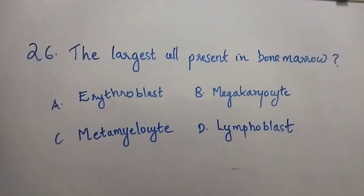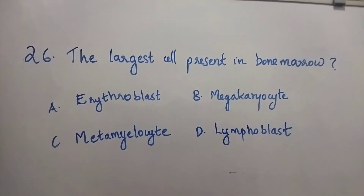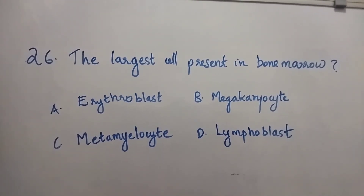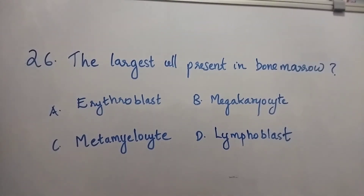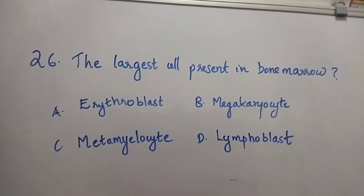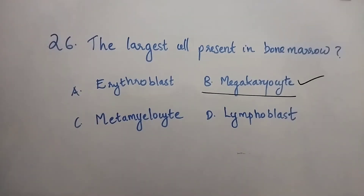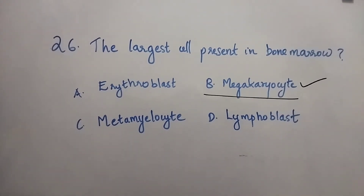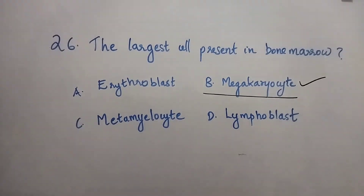Question number 26: The largest cell present in bone marrow — Option A: Erythroblast. Option B: Megakaryocyte. Option C: Metamyelocyte. Option D: Lymphoblast. The right answer is Option B, Megakaryocyte. The largest cell present in bone marrow is the megakaryocyte.